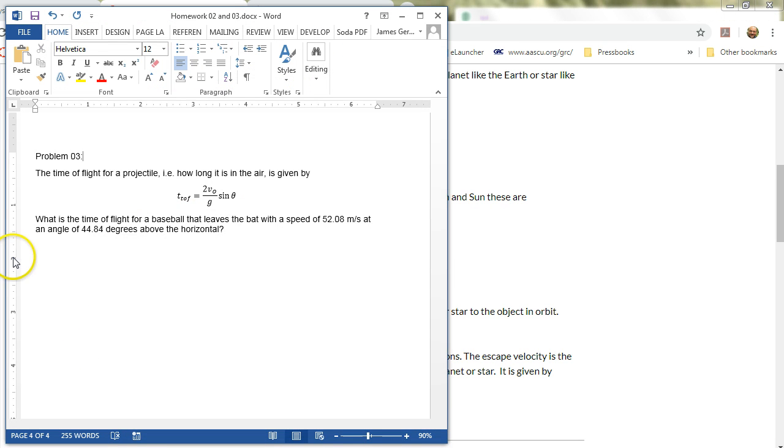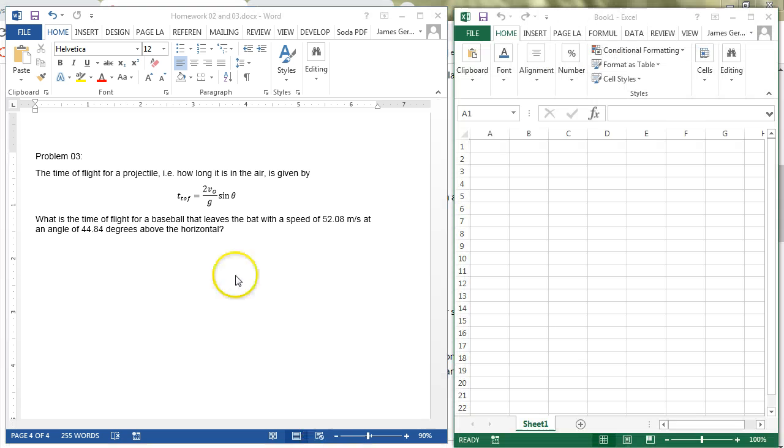Okay, on to the problem. The problem we're going to take on is problem number 3, which introduces yet another equation. When you fire off a projectile, because we know the initial velocity and we know the acceleration of gravity and we know the angle we fired it at, we know how long it's going to be in the air. And that's given by this equation, the time of flight, t sub tof, and the time of flight is twice the initial velocity divided by the acceleration of gravity times sine theta.